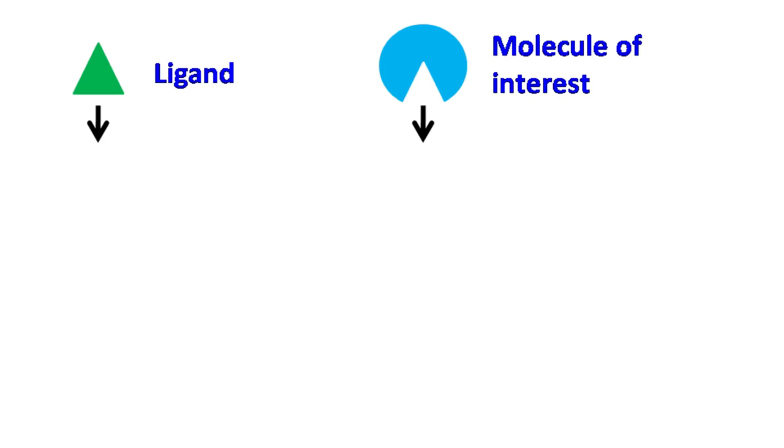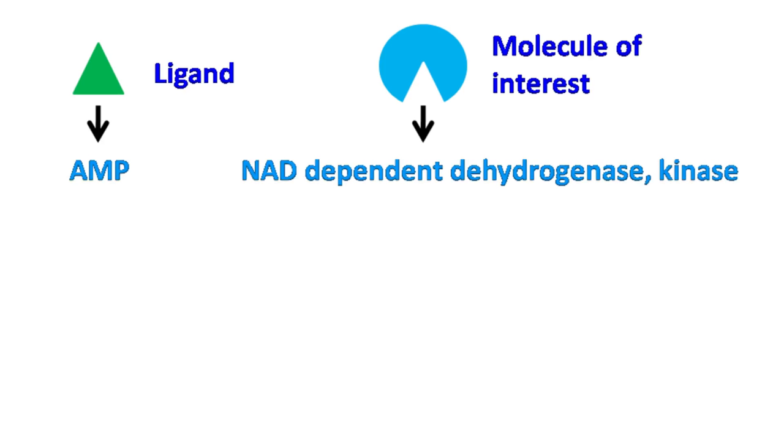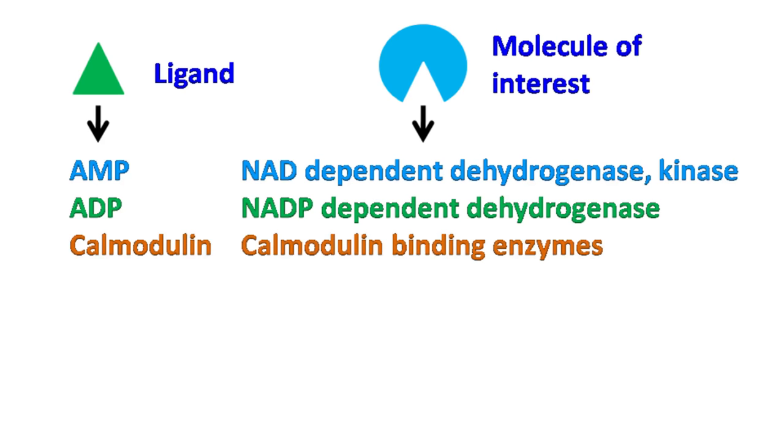Let's see different examples of ligand and the molecule of interest that can be purified with affinity chromatography. AMP can be used for the purification of NAD dependent dehydrogenase and some kinases. ADP can be used for the purification of NADP dependent dehydrogenases. Calmodulin can be used for the purification of calmodulin binding enzymes. Avidin can be used for the purification of biotin containing enzymes.